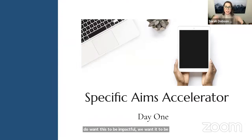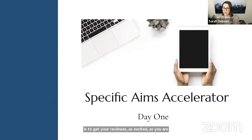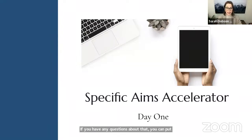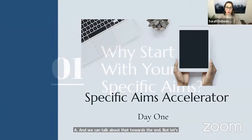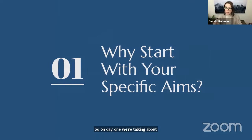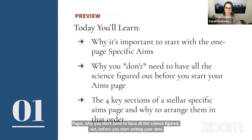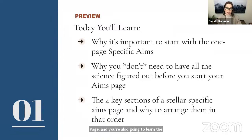I always want you to enjoy yourself as you're doing this, because one of my philosophies is that your job is to get your reviewer as excited as you are about your science. And if you're not excited to start with, it's really hard to convey that in your writing. So on day one, we're talking about why we're starting with your aims page. Why is it important to start here? Today you're going to learn why it's important to start with this one pager, why you don't need to have all the science figured out before you start writing your aims page, and the four key sections of a stellar specific aims page and why to arrange them in that particular order.